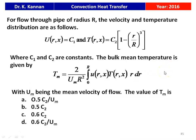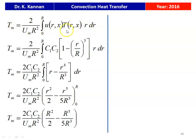Next question from the 2016 question paper: for flow through a pipe of radius R, the velocity distribution U(r,x) = C1 and temperature distribution T(r,x) = C2 × [1 − (r/R)³], where C1 and C2 are constants. The bulk mean temperature is given by T_m = (2 / U_m R²) × ∫₀ᴿ U(r) × T(r) × r dr, where U_m is the mean velocity. The options are 0.5C2/U_m, 0.5C2, 0.6C2, or 0.6C2/U_m. The correct answer is 0.6C2.